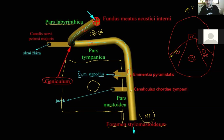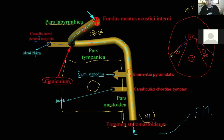Other somatomotor fibers continue down to the facial muscles. Now for the visceromotor: these fibers leave through the canal for the great petrosal nerve, then go into the foramen lacerum and pterygoid canal into the pterygopalatine fossa, where a ganglion is located — the pterygopalatine ganglion.